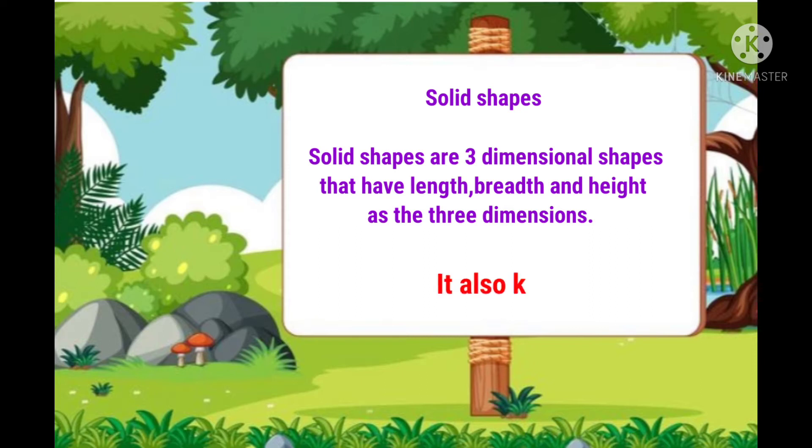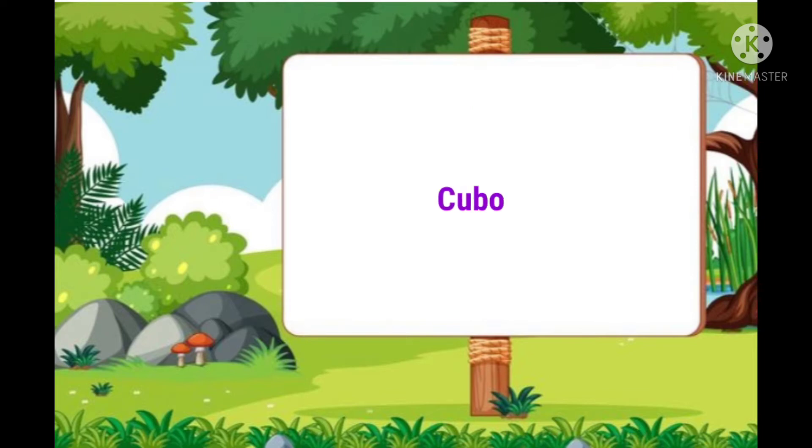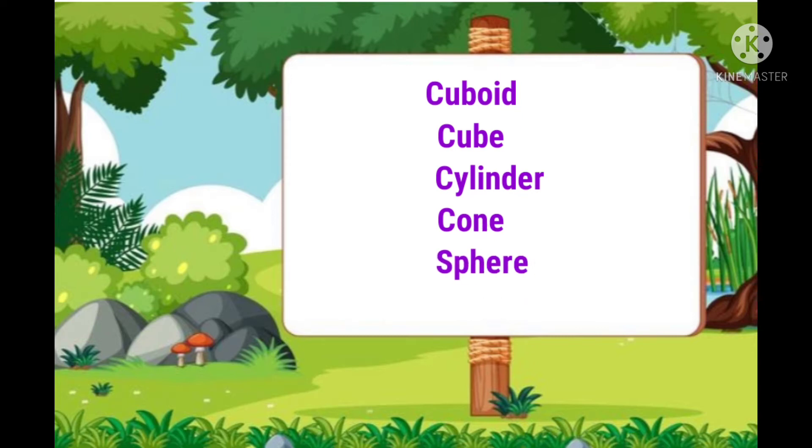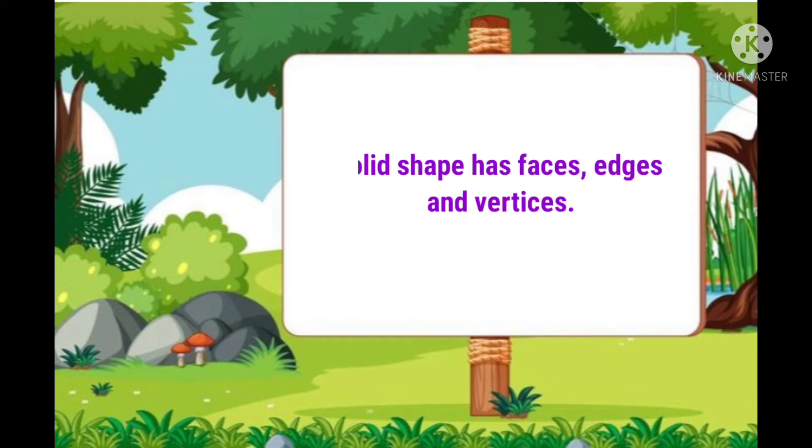It is also known as 3D shapes. The major types of solid shapes are cuboid, cube, cylinder, cone and sphere. Solid shape has faces, edges and vertices. We will now learn about each solid shape in detail.